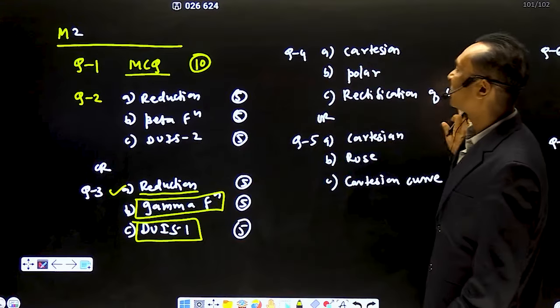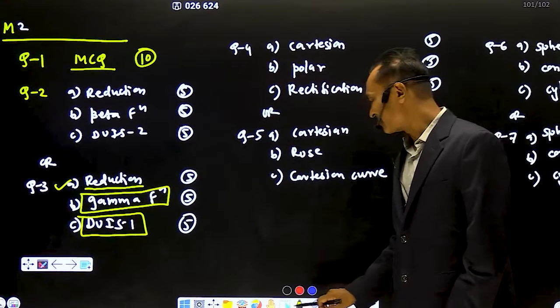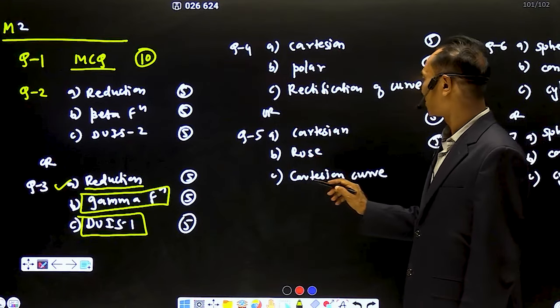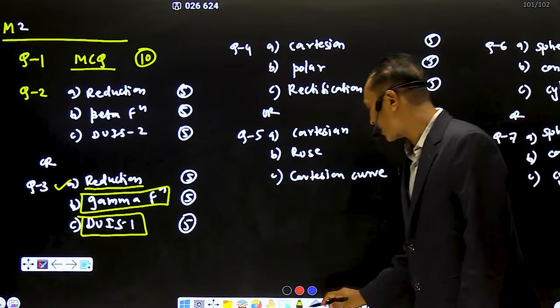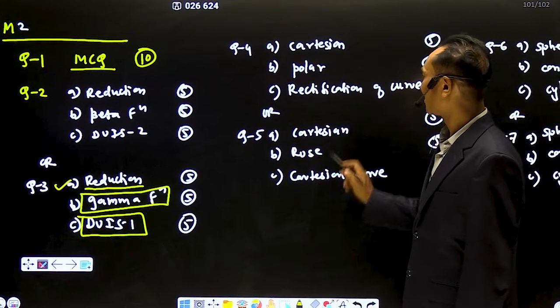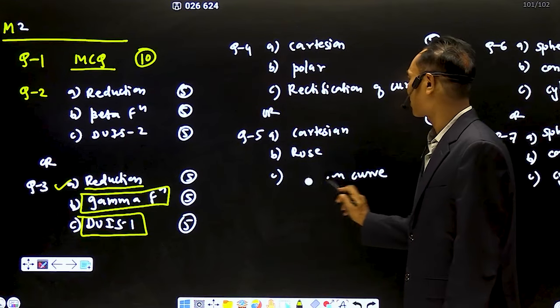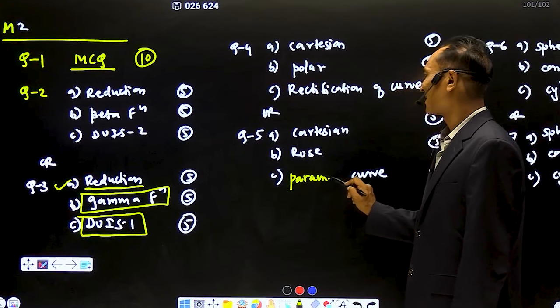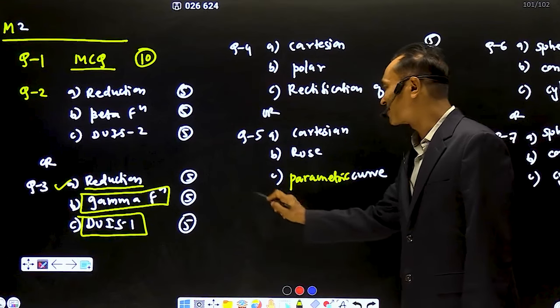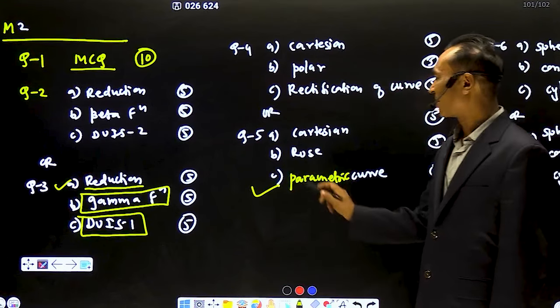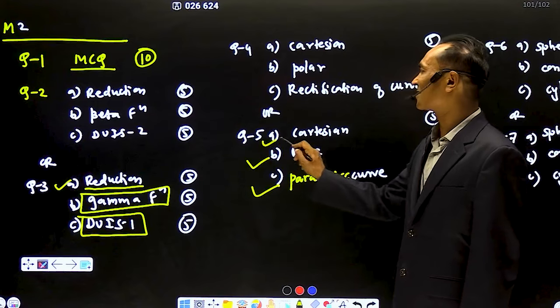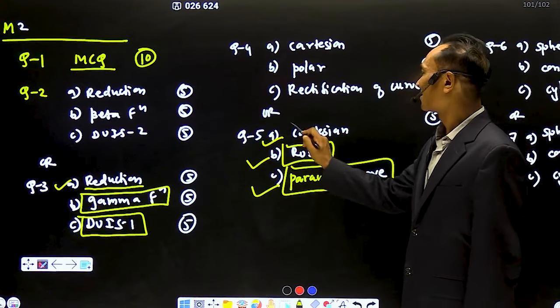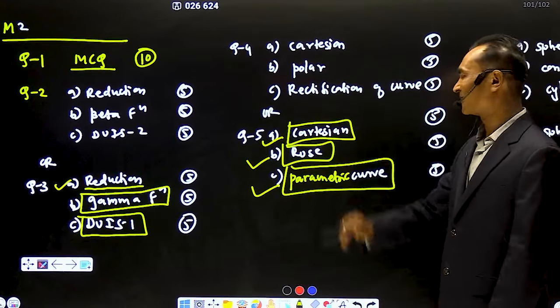After that, Unit 3C, co-tracing. Here, many children do this topic. Which part? Condition is not. Here you have parametric. Parametric is not left. Parametric curve is fixed. Parametric, rose, and condition. Parametric curve is fixed. These three topics are required. Your work will be done.